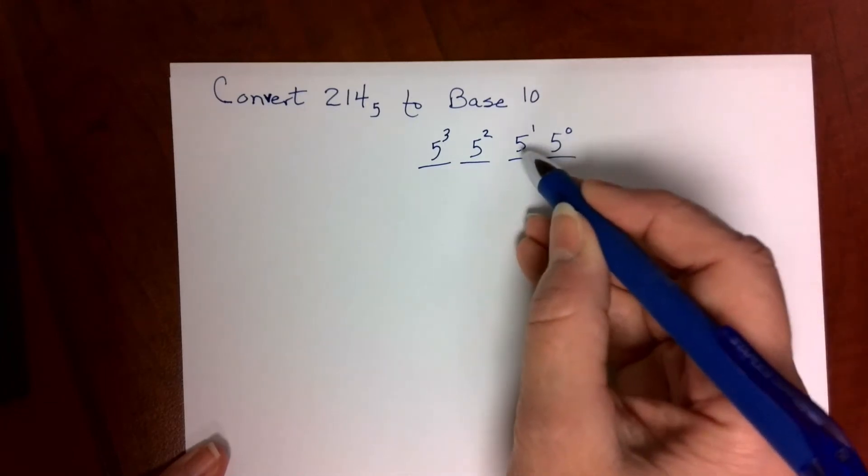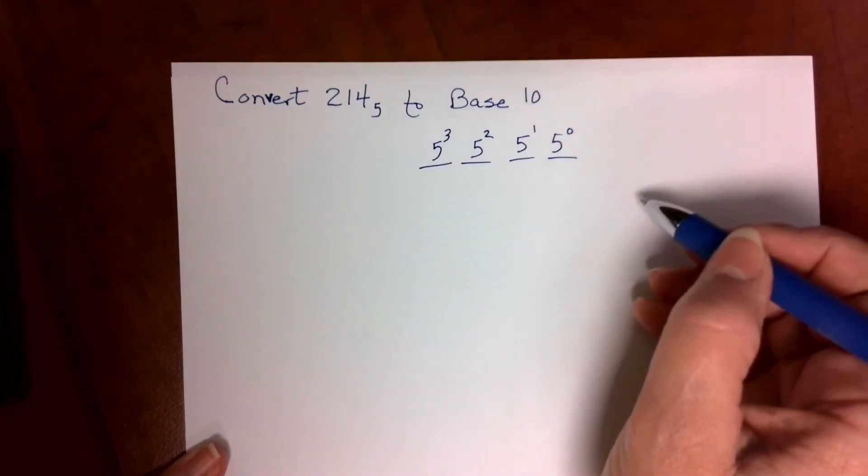It's not 1s, 10s, 100s, 1000s like we're used to because we're in base 5 right now.